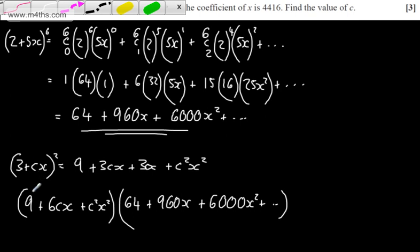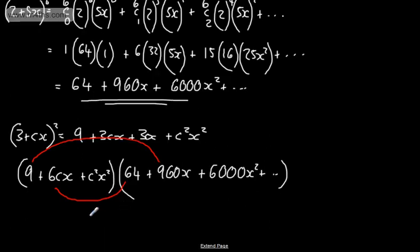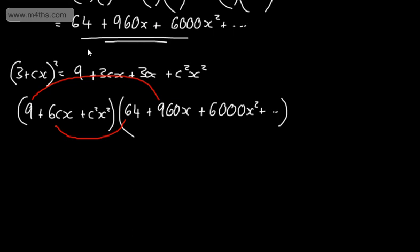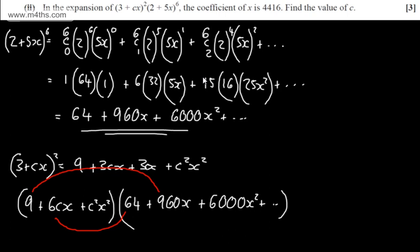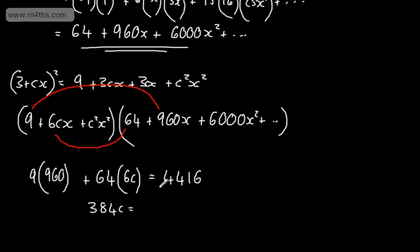We're interested in terms in x. So if we consider the terms in x, we're going to have 9 multiplied by 960, then we're going to have 6Cx multiplied by 64. So on the next line, what I'm simply going to write now, we're told the coefficient of the term in x is 4,416. So I can write now that 9 times by 960 plus, we're going to have 6Cx multiplied by 64, 64 lots of 6C will be equal to this value of 4,416.